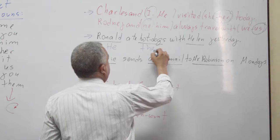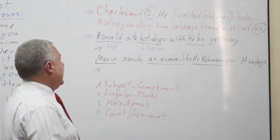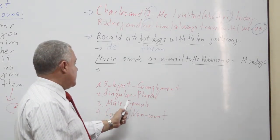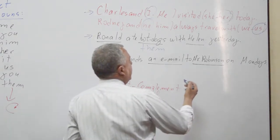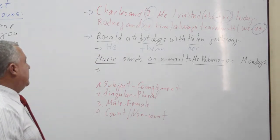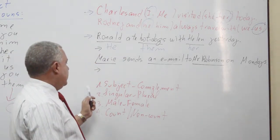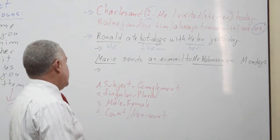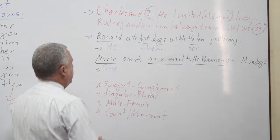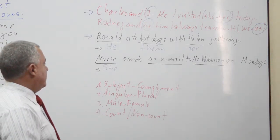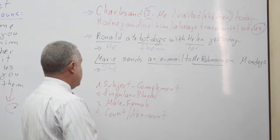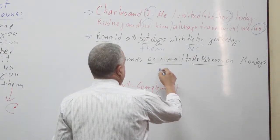At the second sentence, we need to replace Helen. Helen is the complement, singular and female, so Helen is replaced by 'her'. And the animal noun — it is complement, singular, and a non-count noun, so it is replaced by 'it'.